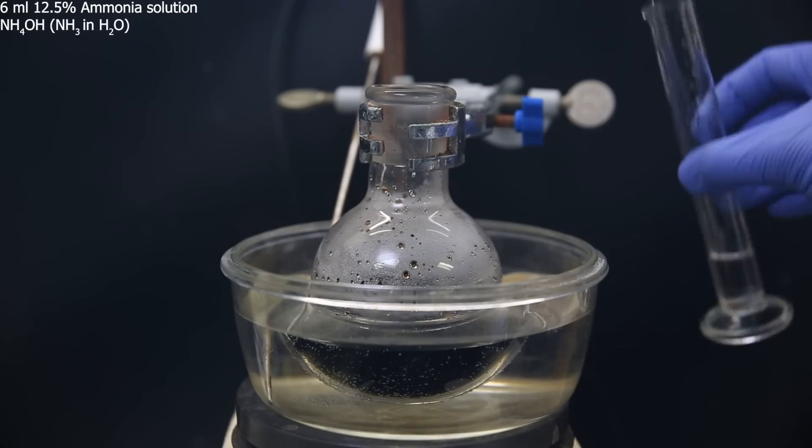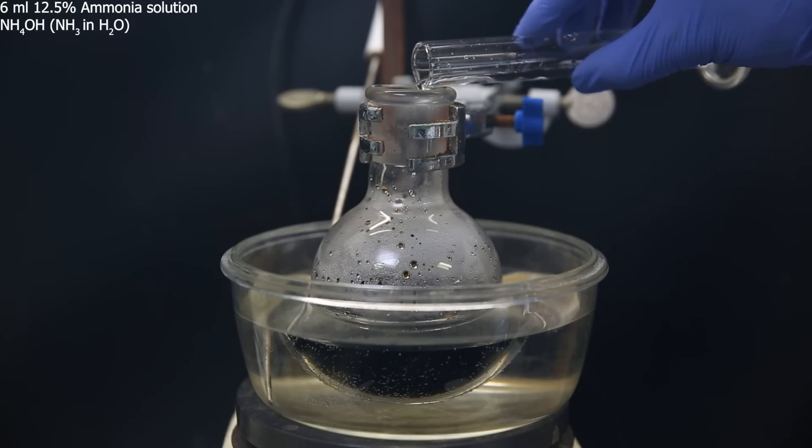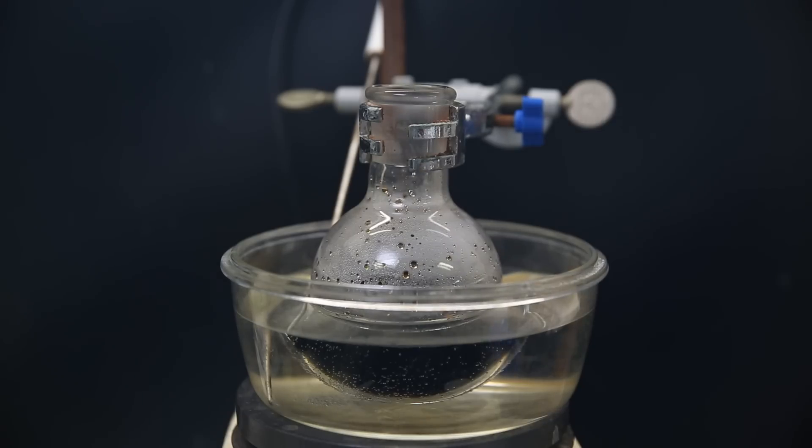Now for the next step, I immediately add 6 mils of a 12.5% ammonia solution. Then after a short delay, a yellow precipitate forms.